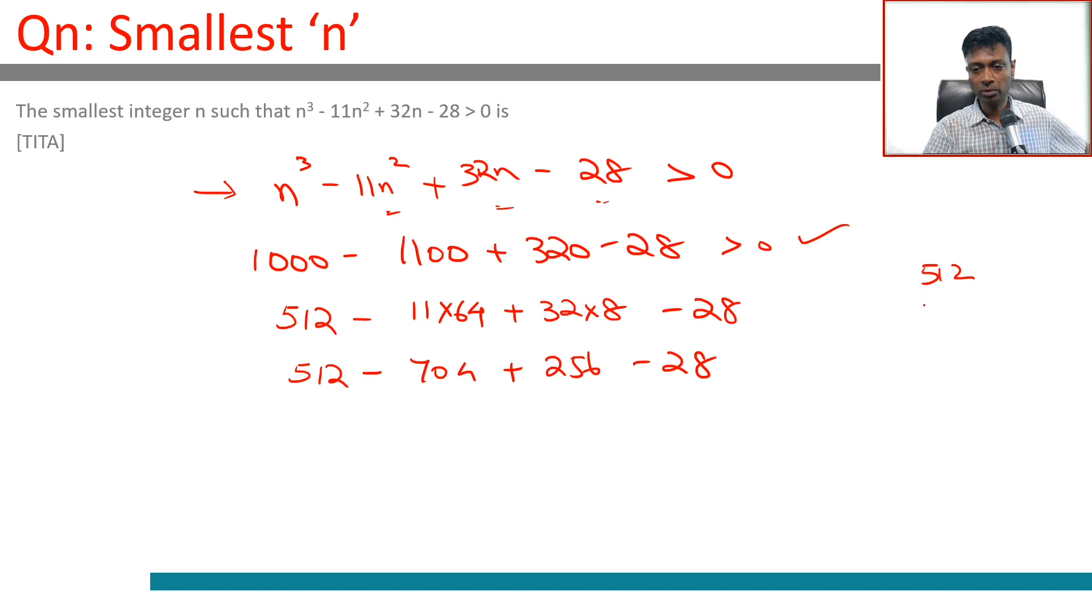So 512 plus 256 is 768. 704 plus 28 is 732. So 512 + 256 is greater than 704 + 28. So 8 works.